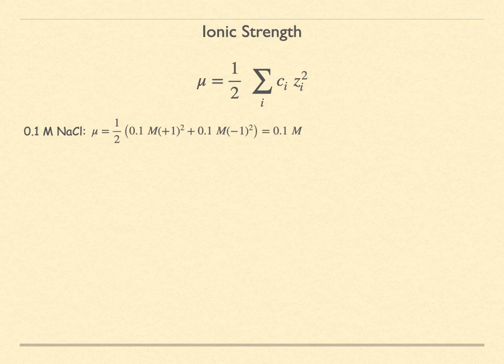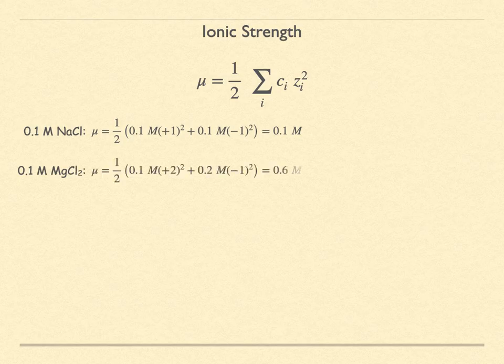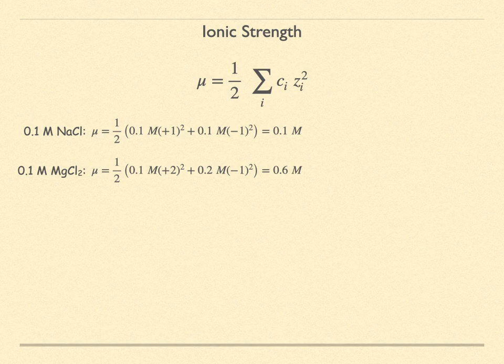Another example is magnesium chloride. The magnesium cation has a charge of plus 2, because there are 2 chloride ions per molecule, the concentration of chloride will be 0.2 molar. Together they give an ionic strength of 0.6 molar.